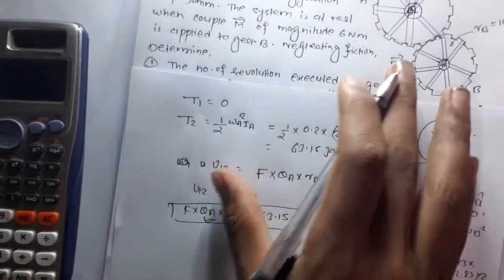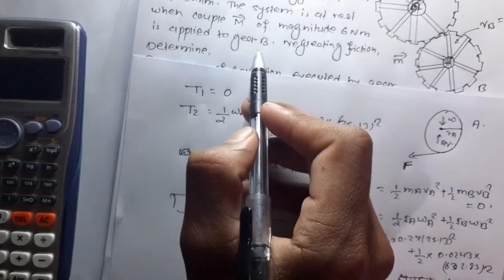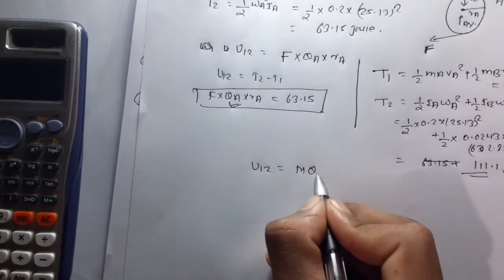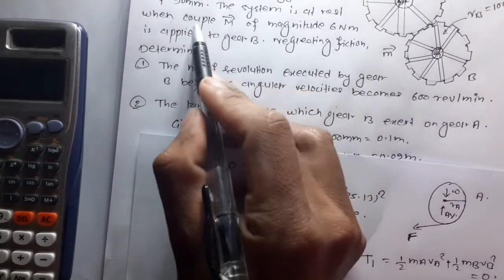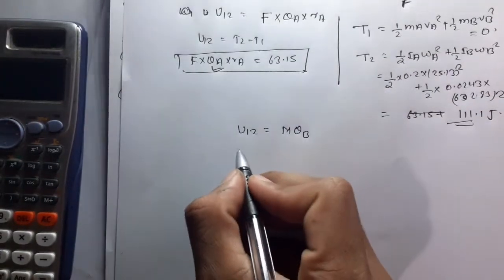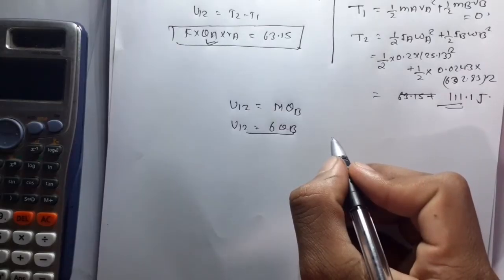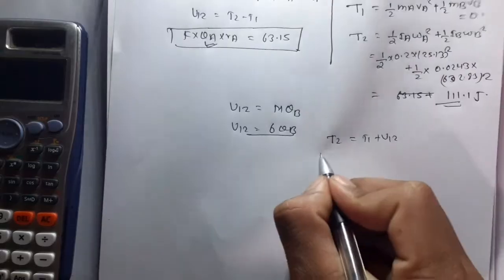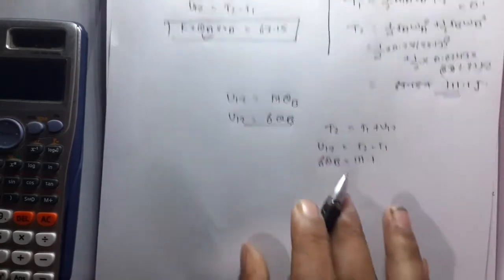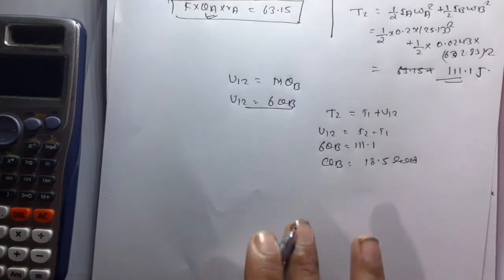Since a couple M of magnitude 6 Nm is applied to gear B, the net work U12 = M × θB = 6θB. Using conservation of energy: T2 = T1 + U12, so 6θB = 111.1, giving θB = 111.1 / 6 = 18.5 rad.